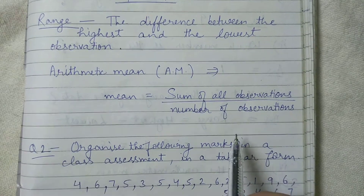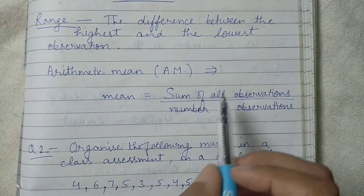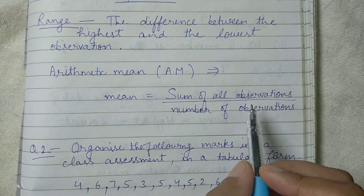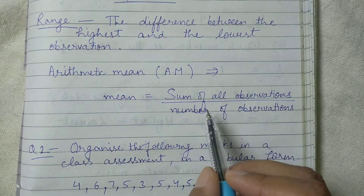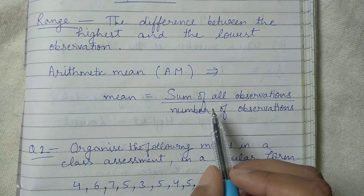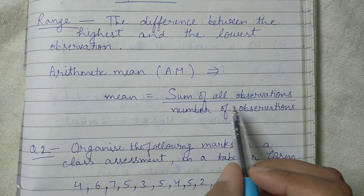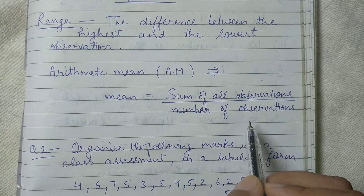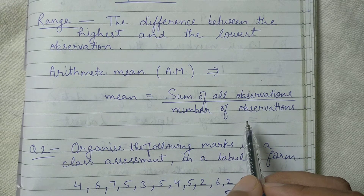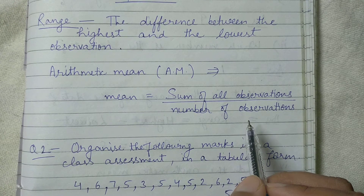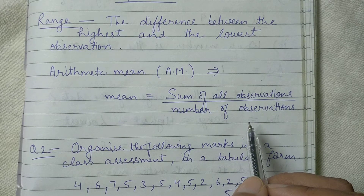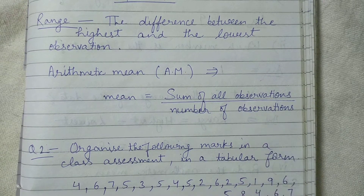Arithmetic mean. When you are finding the arithmetic mean it means you are finding the average. The formula for finding the arithmetic mean is: sum of all the observations divided by number of observations. You have to add all the observations and divide by the total number of observations. This is the formula to find the mean, to find the average.